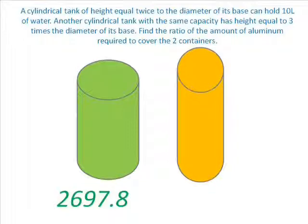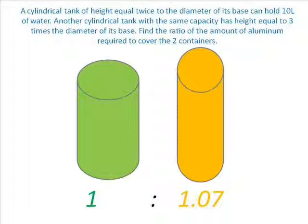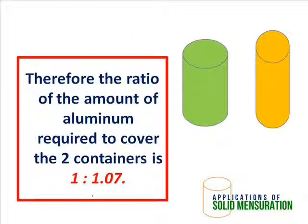Thus, the ratio is 2697.8 to 2882.3. Now, approximating that with our calculator, we get an answer that is 1 to 1.07. Therefore, the ratio of the amount of aluminum required to cover the two containers is 1 to 1.07.